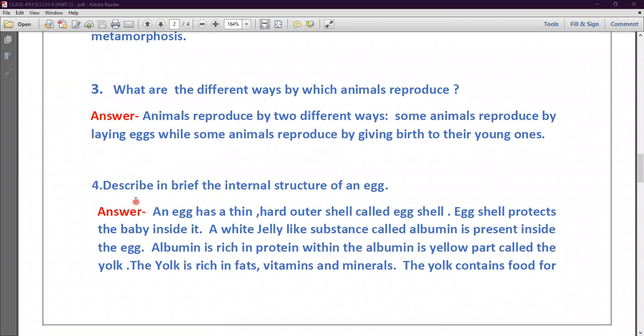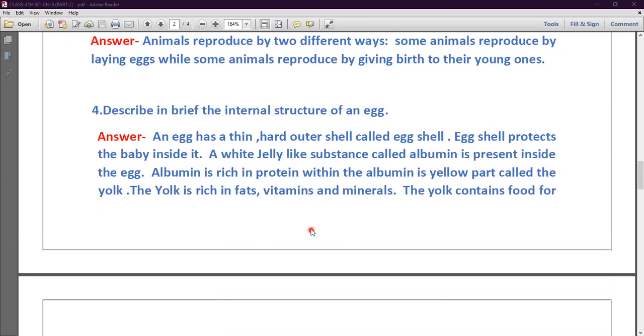Now second is describe in brief the internal structure of an egg. So an egg has a thin hard outer shell called egg shell. Egg shell protects the baby inside it, and a white jelly-like substance called albumin is present inside the egg.